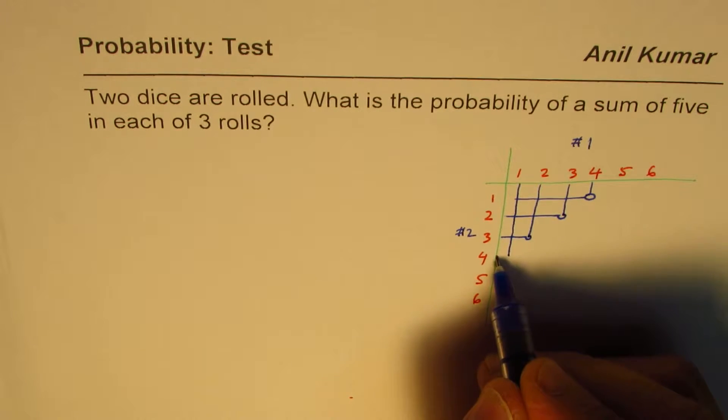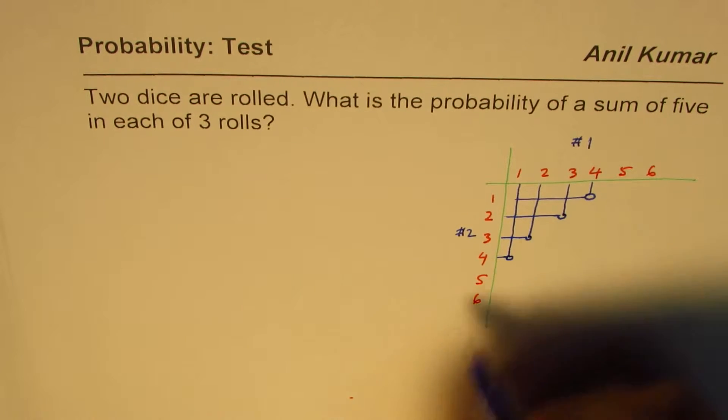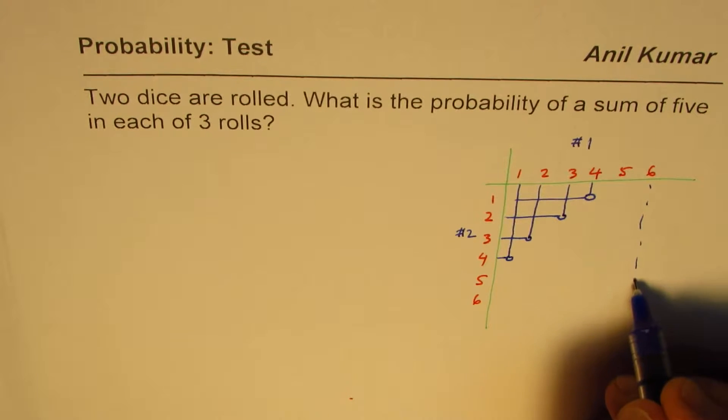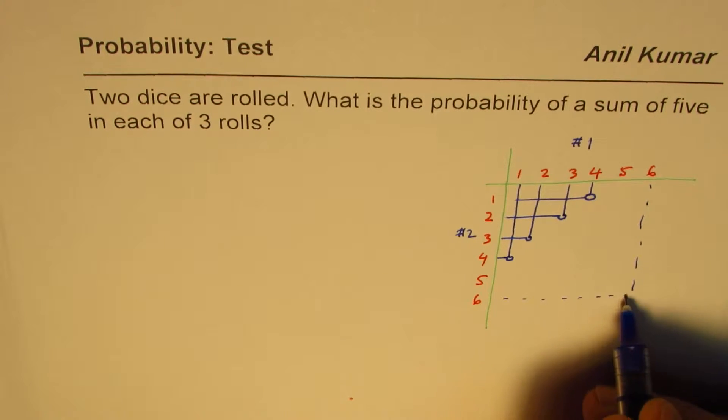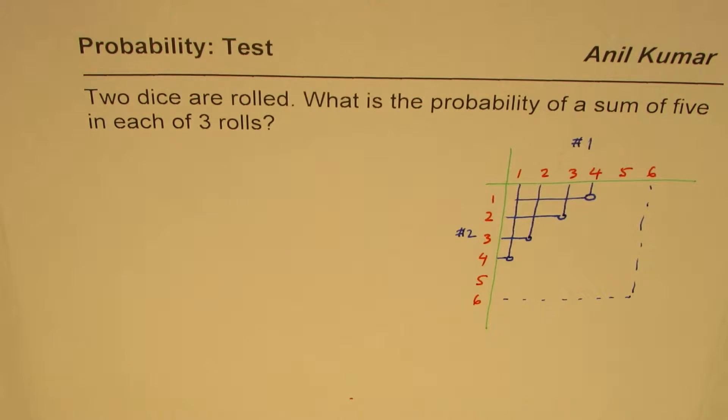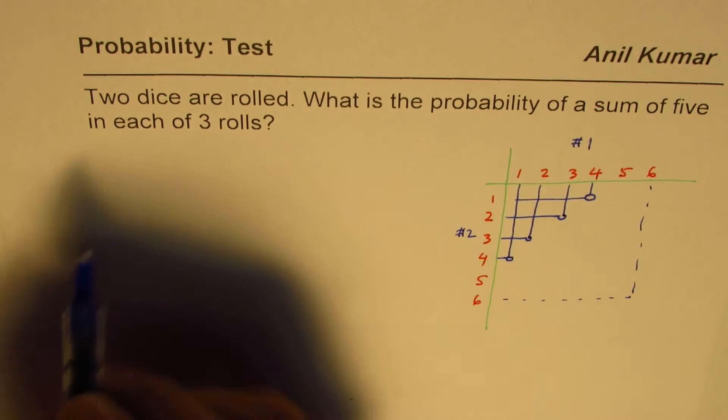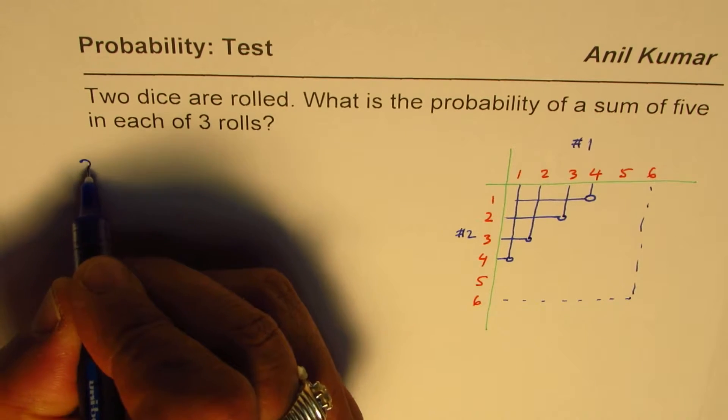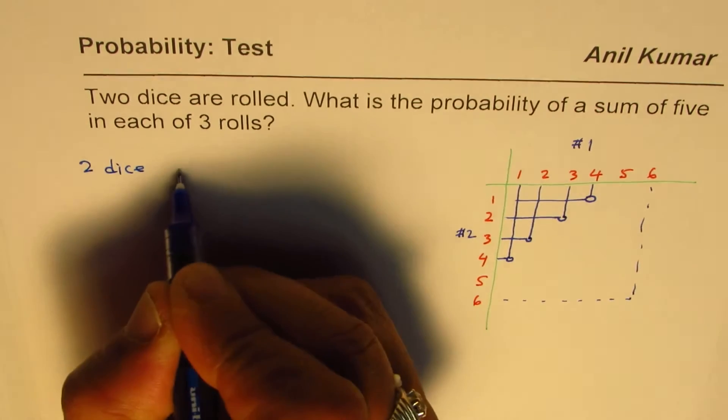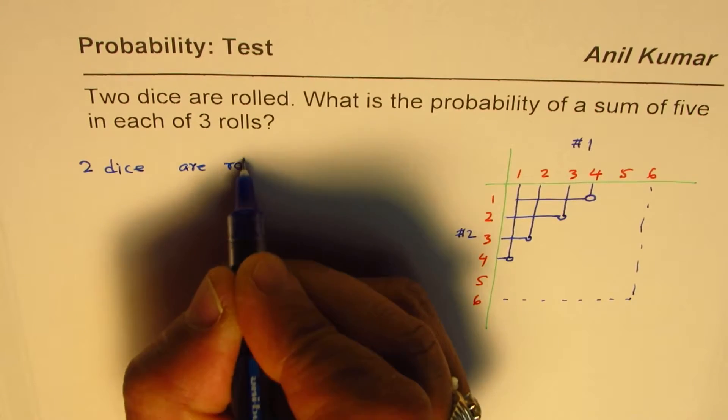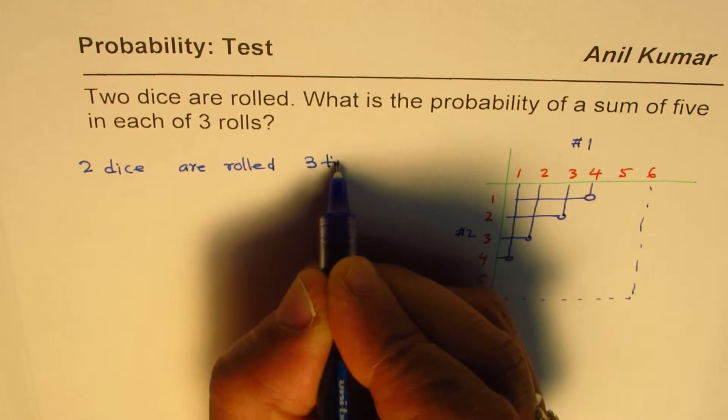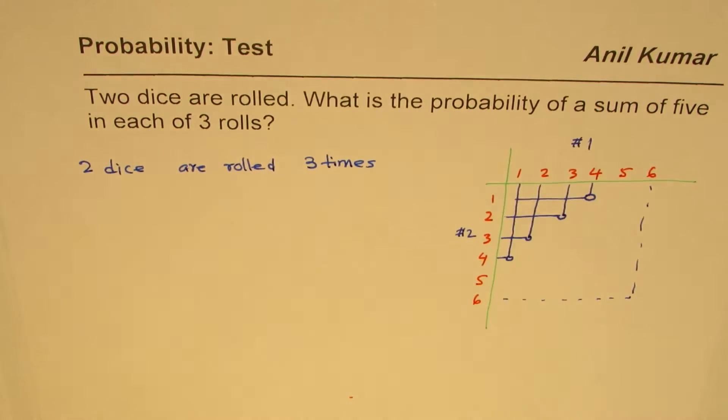Right, so these are four combinations out of how many? Out of six times six, which is thirty-six. Correct. So two dice are rolled three times, that is the scenario.